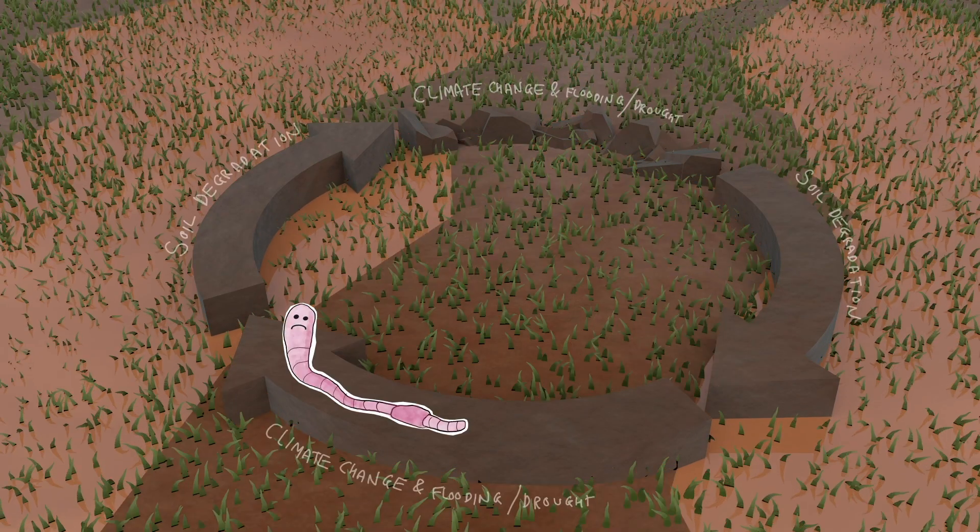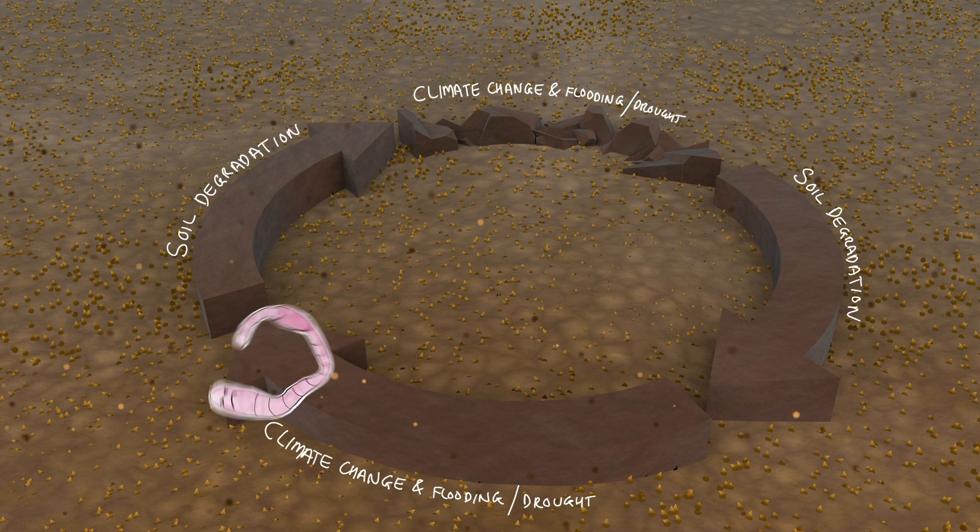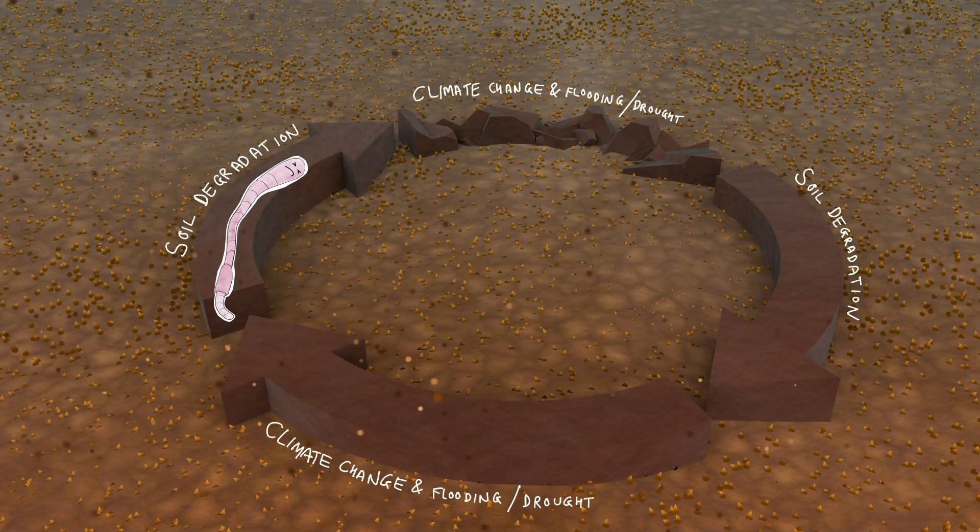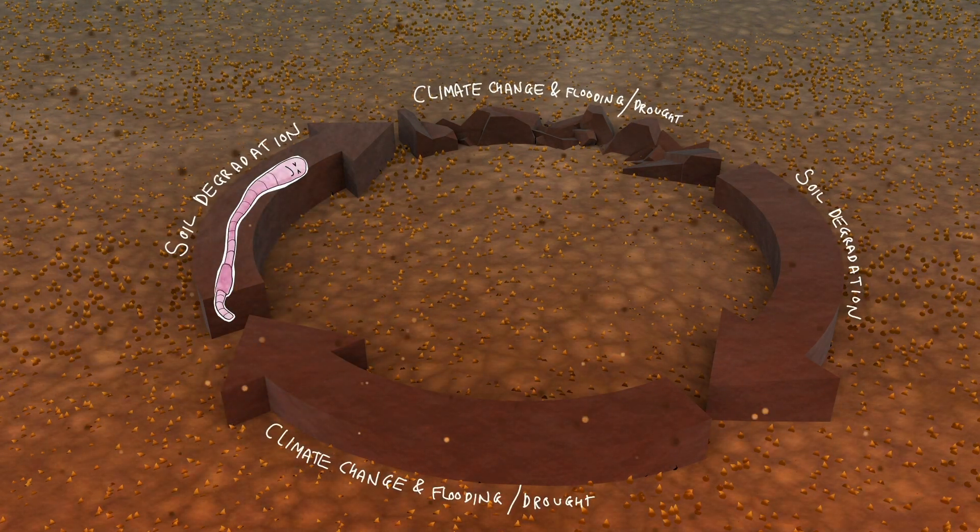Climate change also causes droughts. Again, this is bad for the soil, which dries out and can get blown away by the wind instead.